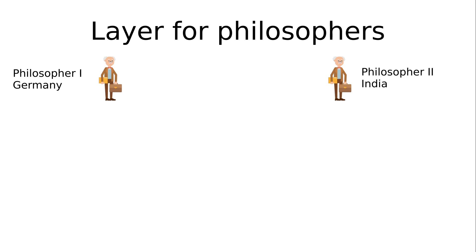As an explanation, I want to explain layer models using a philosopher example. Let's think about the following situation: we have two philosophers, one sitting in Germany only speaking German, and one sitting in India only speaking Hindi. They are both working on the same topic and they like to exchange their ideas to make progress in their studies. But if they just called one another, it wouldn't work because they don't speak the same language. Luckily, the philosophers have some staff helping them to get a communication line implemented.